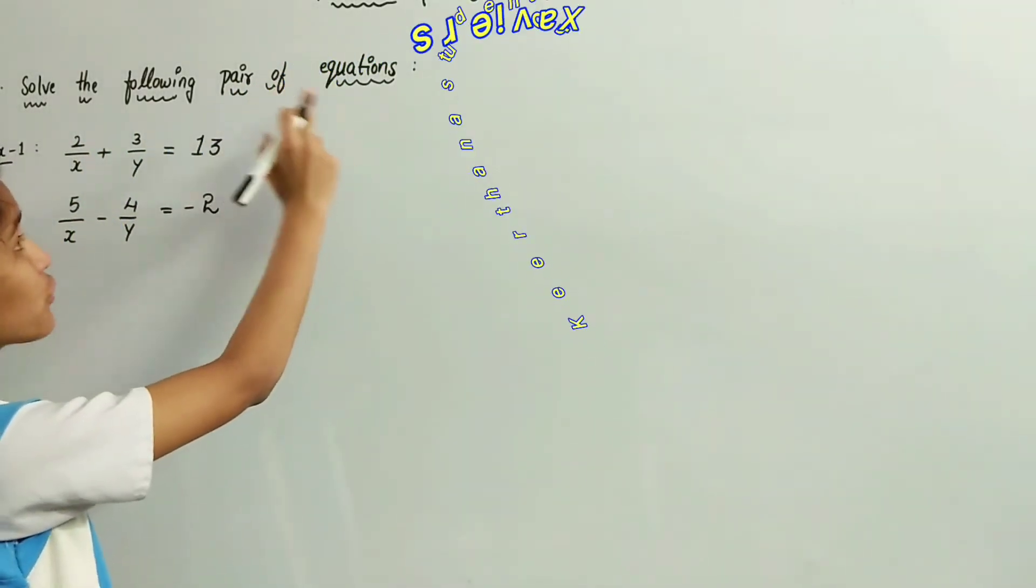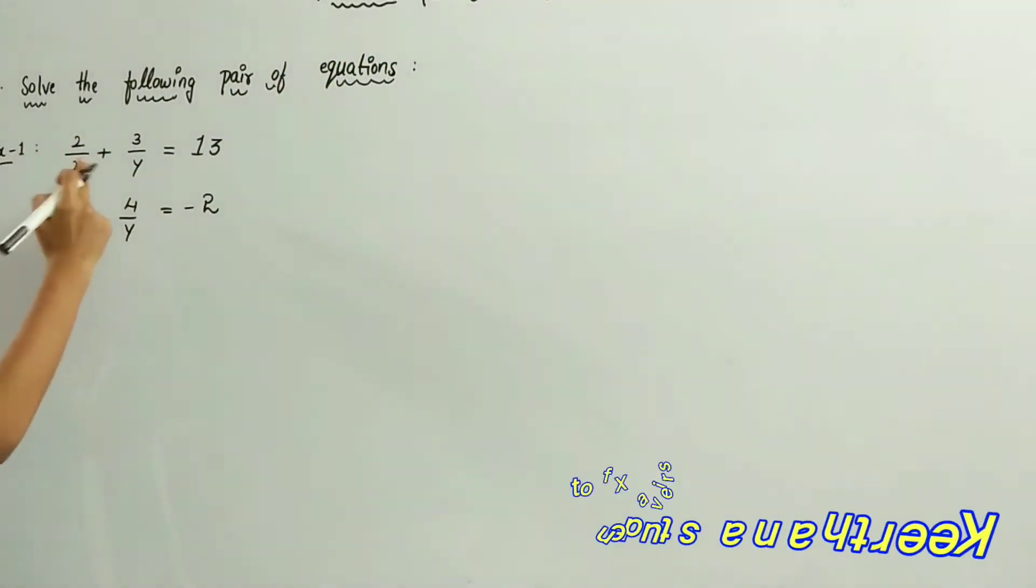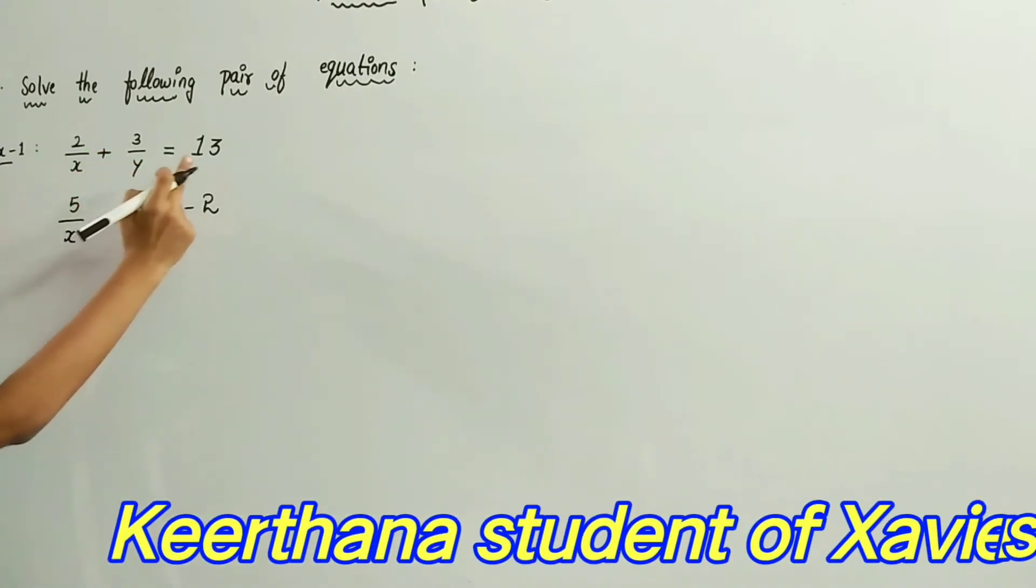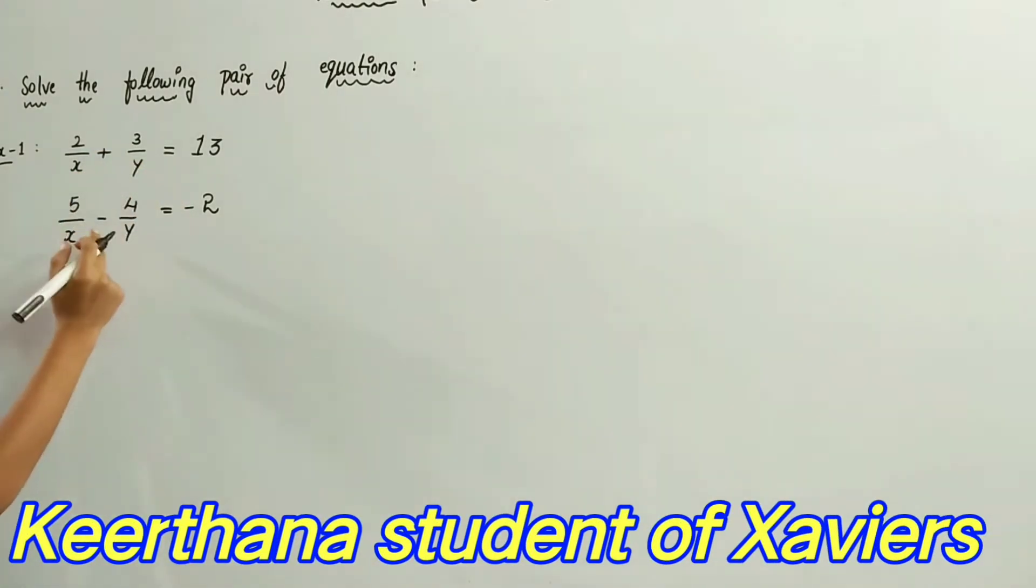Solve the following pairs of equations. 2 by x plus 3 by y equals 13. 5 by x minus 4 by y equals minus 2.